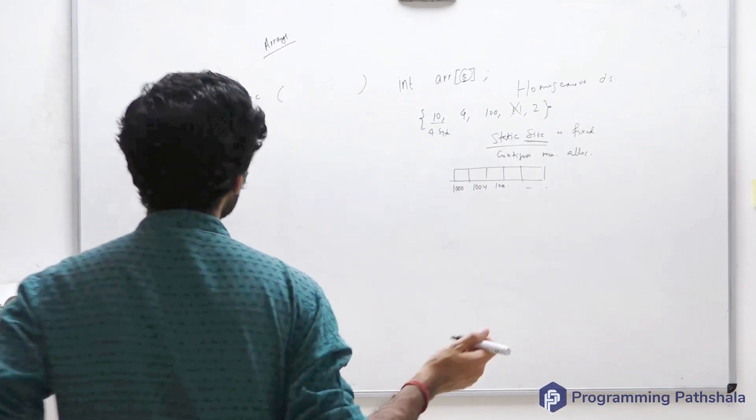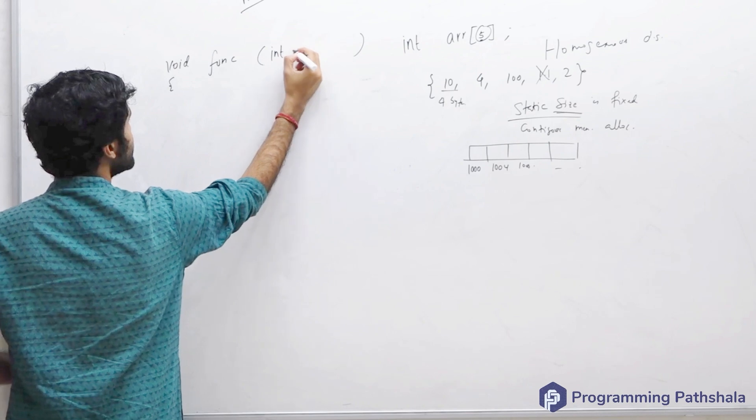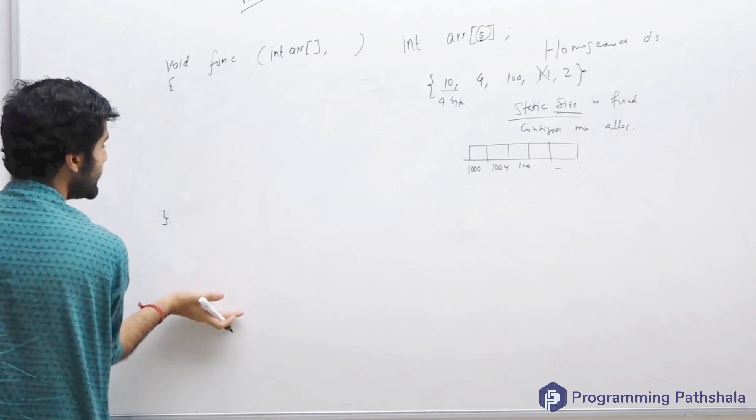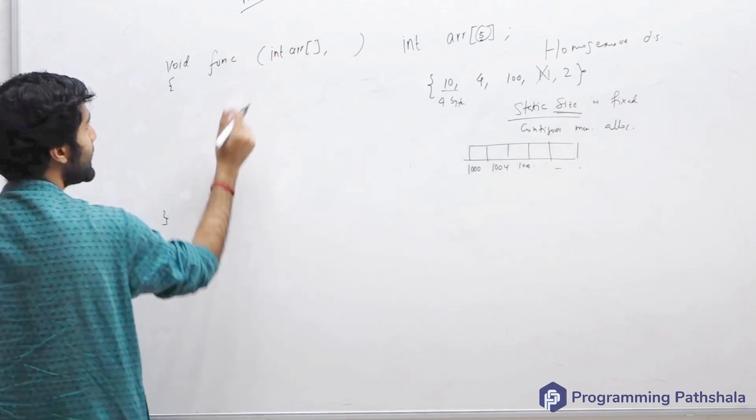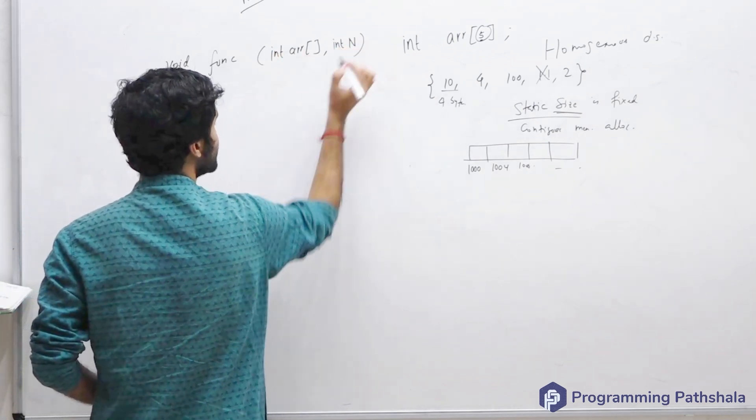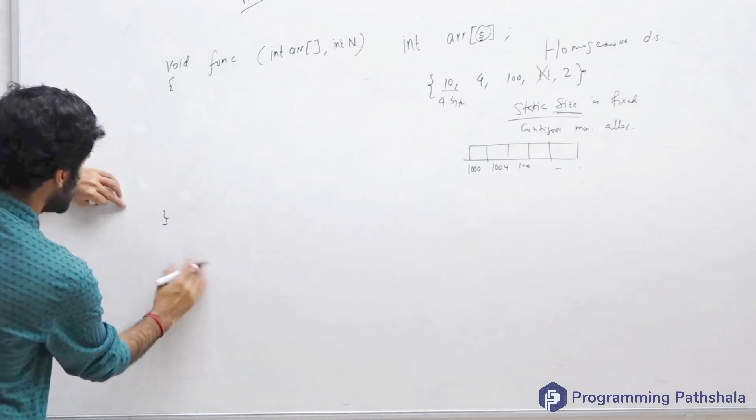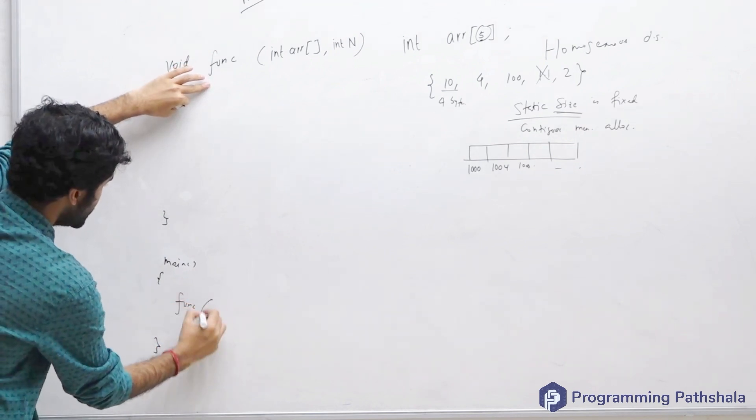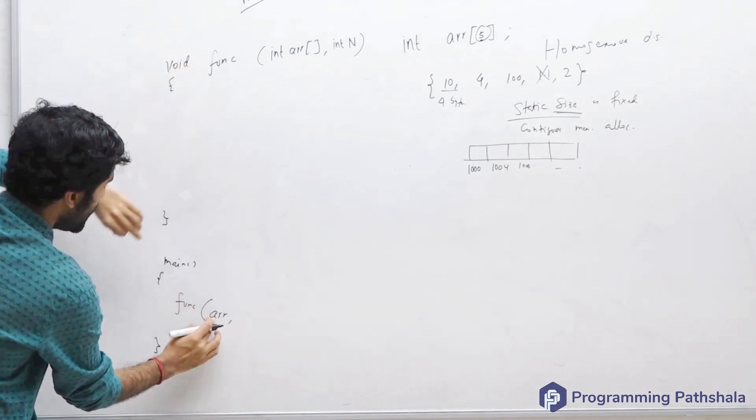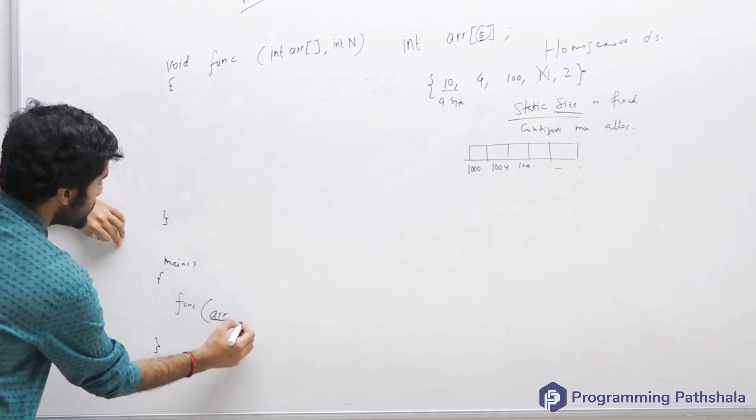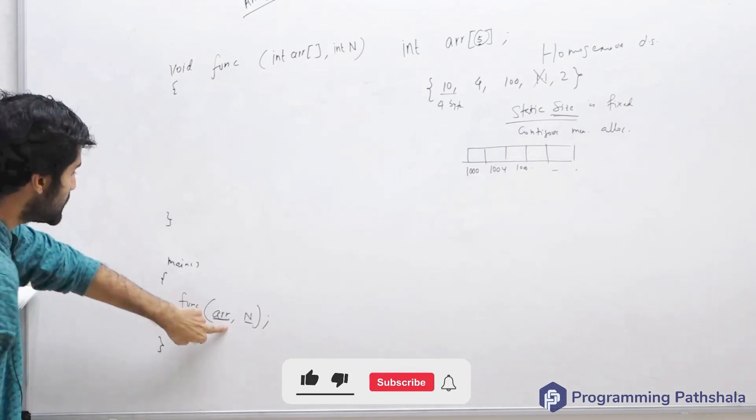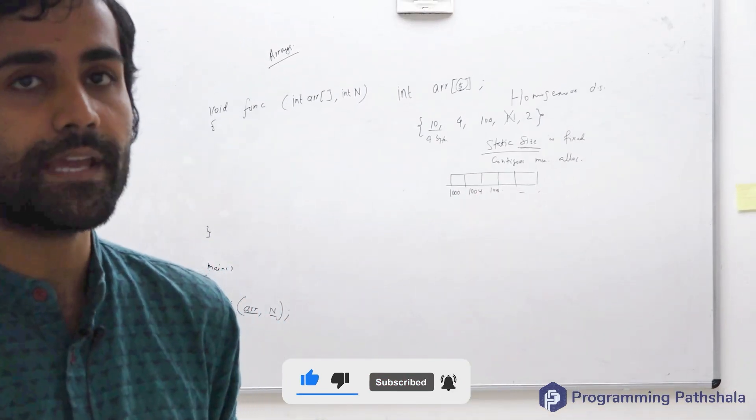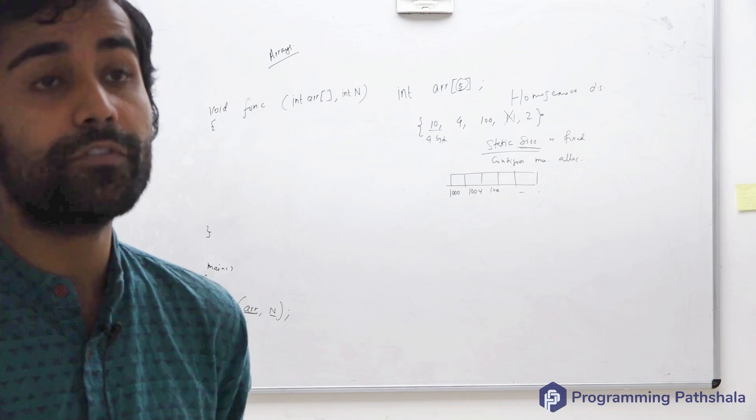So how do you pass an array by reference? A very simple way to pass it by reference is you can have something like this. This basically assumes that the array you're trying to pass here is pass by reference, and also the size variable. So if there's a main function, you can invoke this function, pass in the array. What is the physical significance of the name of the array?